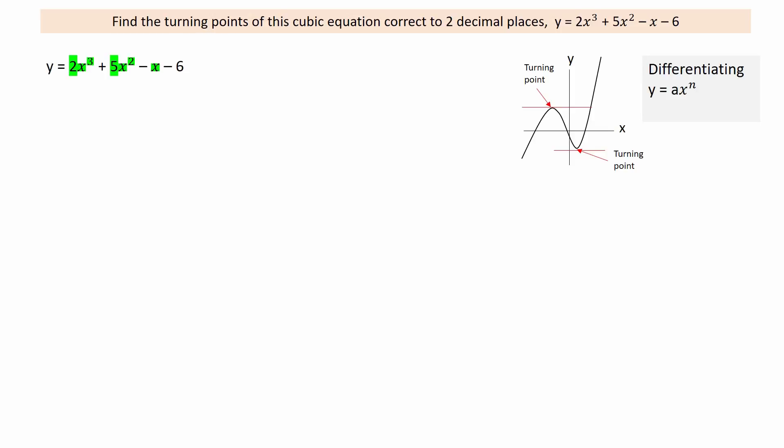Each term of the cubic equation is of the form ax to the power of n. To differentiate, multiply the power of x by the constant a to obtain an. Then decrease the power of x by one.